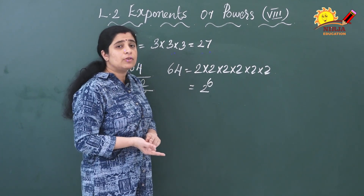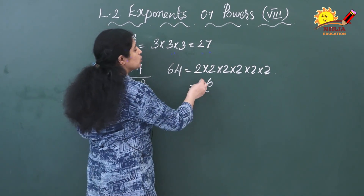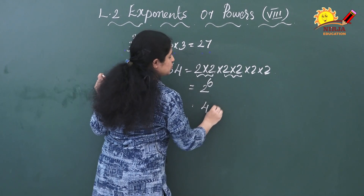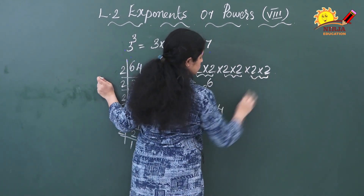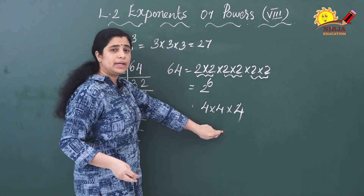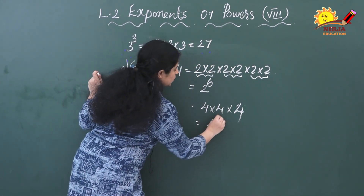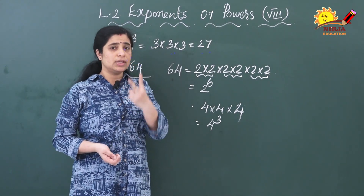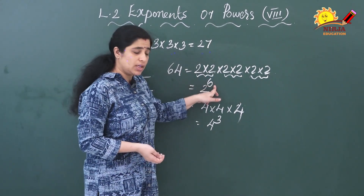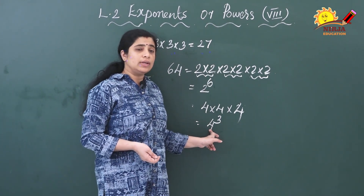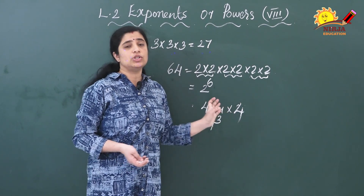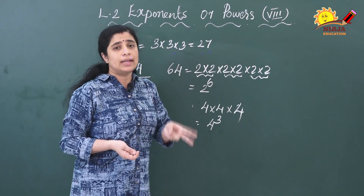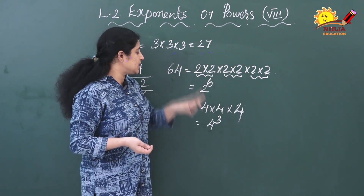This can be written in another form also. I am going to group these 2s: two 2s grouped give 4, again two 2s give 4, again two 2s give 4 — that is 4 three times, equal to 4 raised to 3. So 64 can be written two ways in exponential notation: that is 2 raised to 6 and also 4 raised to 3.